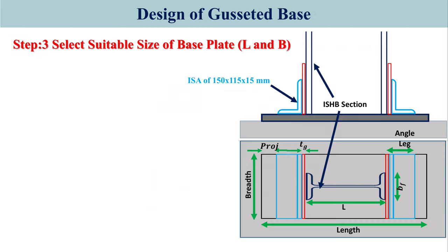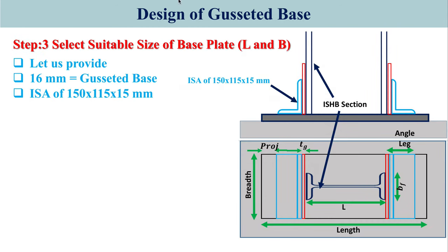In a gazetted base you have to provide a gusset plate. The ISHB section is used along with an unequal angle section ISA 150×115×15 — the longer leg of 150 mm is used to connect the bolt, the shorter leg is 115 mm, and the thickness is 15 mm. The thickness of the gusset plate is 16 mm.